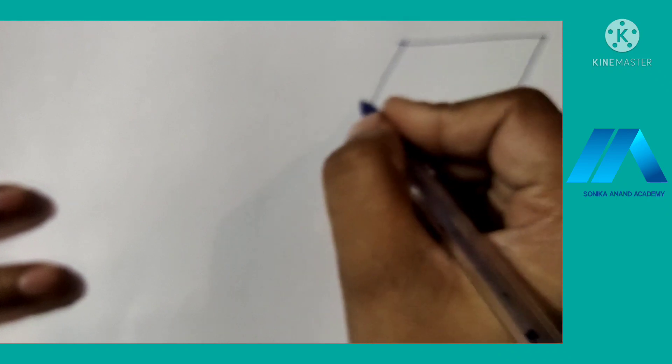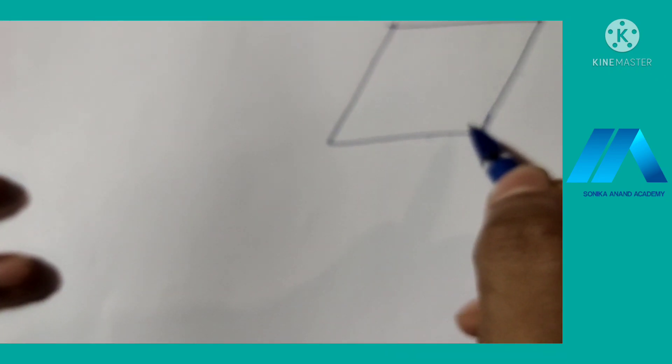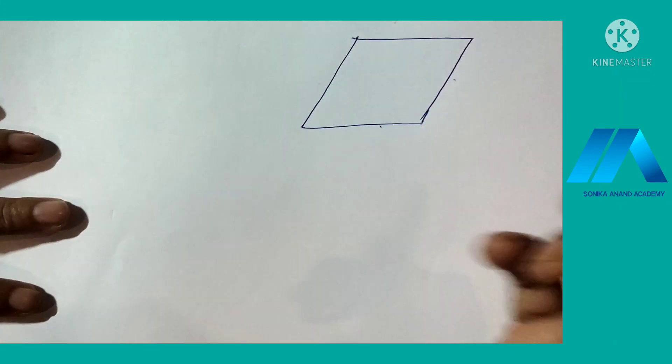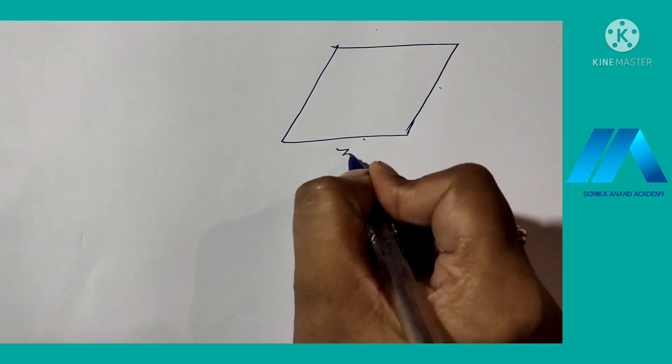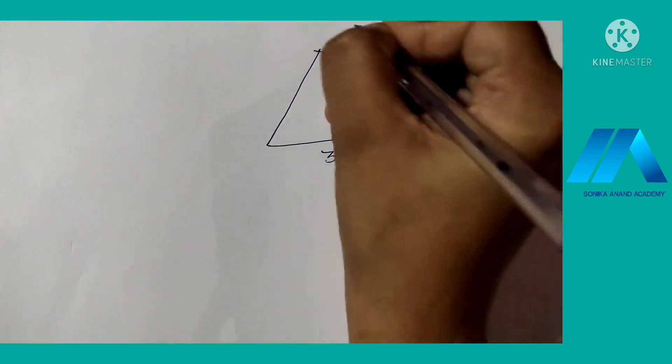In a rhombus shaped field, the four sides are equal. So here it is written that each side of the rhombus is 30 meters. So all these are 30 meters.